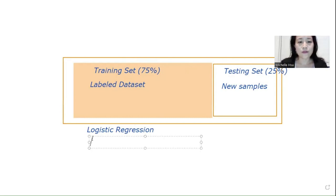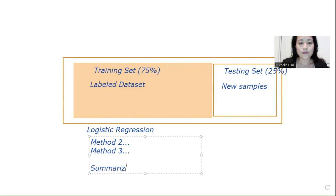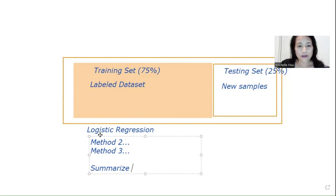If you're interested in using more methods — method two, method three — you do the same thing. In the end, we summarize how each method performs under the testing set. One way to describe the outcome performance is by using a contingency table and confusion matrix.